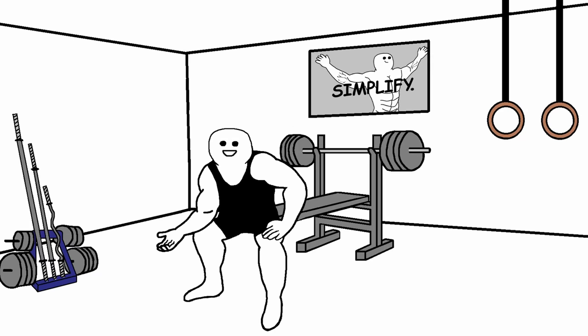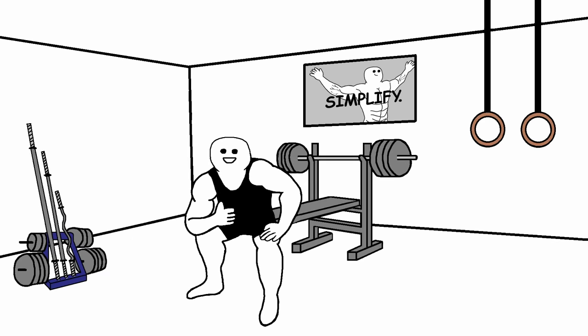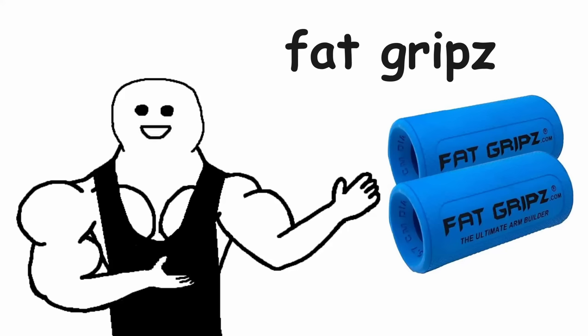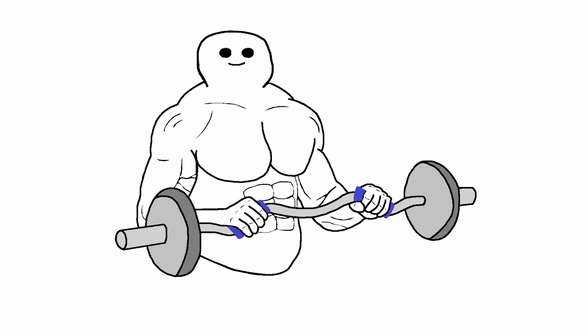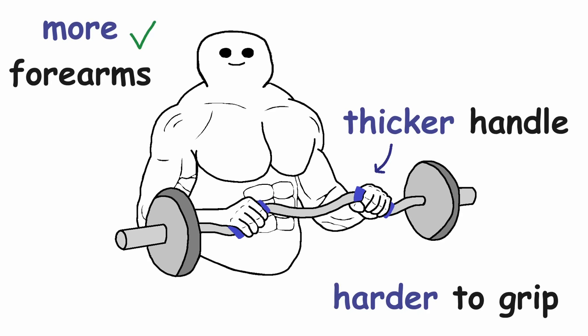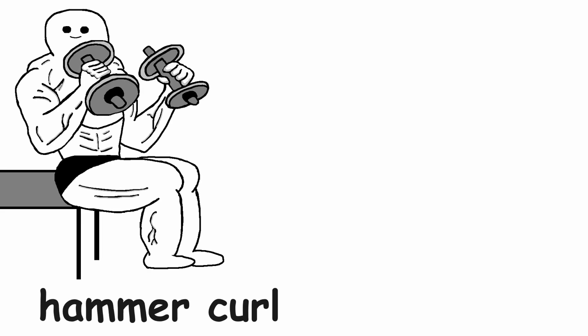The next thing on the list is not necessarily an exercise, but it's very useful. It's called fat grips. When you put it on a barbell or a dumbbell, it will make the handle way thicker, which is going to make it way harder to grip, thus activating your forearms even more. It's a brilliant choice for the hammer or reverse curl.